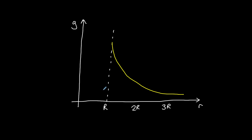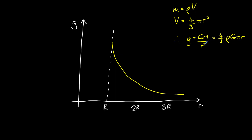How does the field strength vary inside the Earth? You might expect it to get stronger as we head towards the Earth's centre, since R would be decreasing. However, the mass between us and the centre of the Earth is actually getting smaller, until it is eventually zero at the centre. We can prove this by using the equations for density and volume of a sphere to replace M in the gravitational field strength equation. Eventually the R squared cancels, leaving us with g proportional to R when inside the Earth, assuming uniform density. This means there is a linear decrease as R decreases.